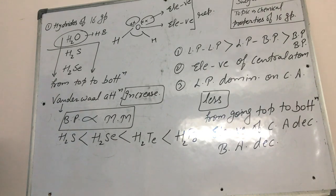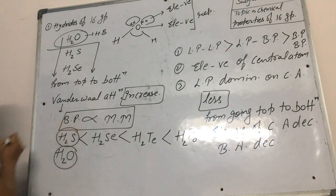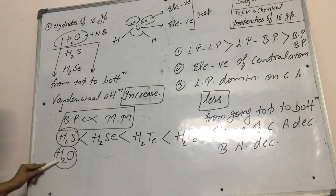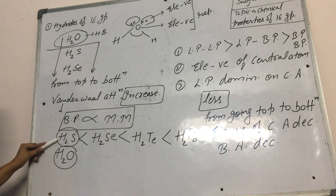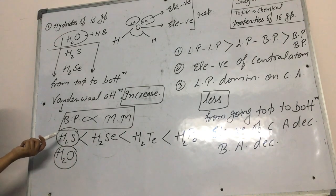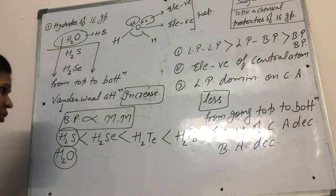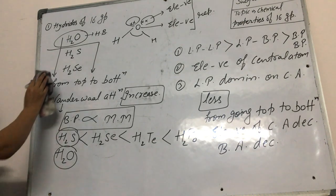A small question: water is found in liquid state but H₂S is found in gaseous state — why? Because of hydrogen bonding, water is found in liquid state, but H₂S does not show hydrogen bonding, so it is found in gaseous state as usual. This is how water shows anomalous behavior because of hydrogen bonding.